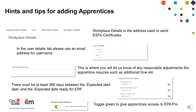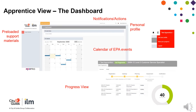Hints and tips for adding apprentices: Workplace details is the address used to send the ESFA certificates. In the User Details tab, please use an email address for the username. Reasonable adjustments, previously known as access arrangements, is where you will advise us if the apprentice requires any additional time. There must be at least 366 days between the expected start date and the expected date ready for EPA. Toggle green to give apprentices access to EPA Pro. Apprentices' view is a simplified version of the platform, giving them access to four key areas: their individual calendar of EPA activity and events, their individual notifications, access to support materials tailored to their standard, and a personal profile area with a view of progress throughout their EPA.